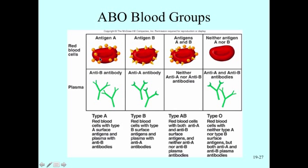Remember that blood is made up of the liquid part, plasma, and the formed elements, of which most are red blood cells. This is the solid part of our blood that has these red blood cells with the antigens on them. The plasma has a number of different components. Plasma is about 91% water, and the other percent is made up of different proteins. These proteins are globulins, which are antibodies, and they are found in the plasma.